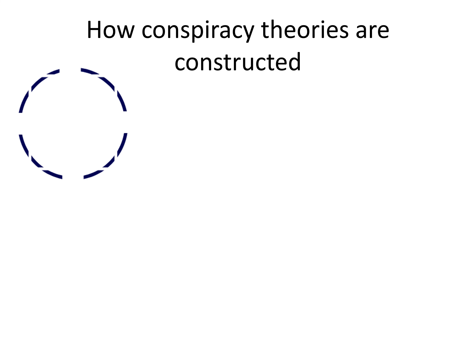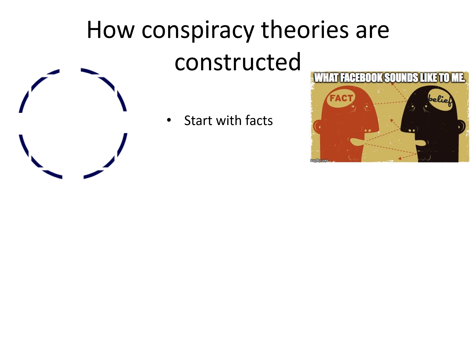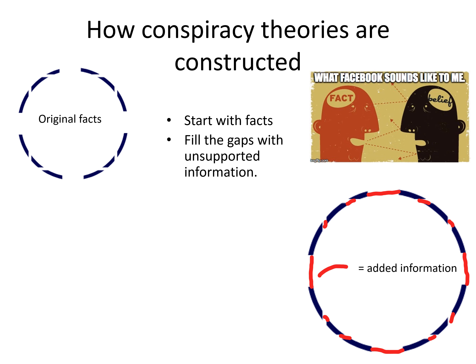Each little blue line we could imagine is a fact. So we start with facts. When we are making a conspiracy theory, we fill the spaces between the facts with often unsupported, sometimes false, sometimes our dreams, sometimes magical information. The red lines would be all of these other things we add to the facts. And that is how we construct a conspiracy theory.